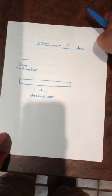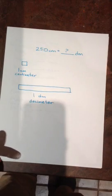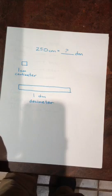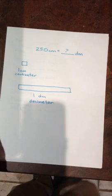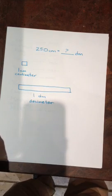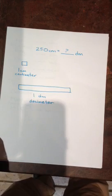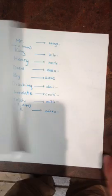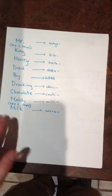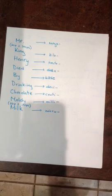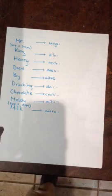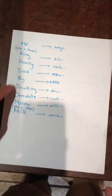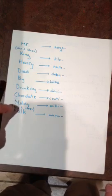So when it comes to doing metric conversions, you need to know a few things. One, you need to know what each of the prefixes of each of the different measurements mean, how much they're worth, and then how to change from one to another quickly. So one way to remember this is with a mnemonic. A mnemonic is just a device to help you remember something. The one I like to use is Mr. King Henry died by drinking chocolate moldy milk.